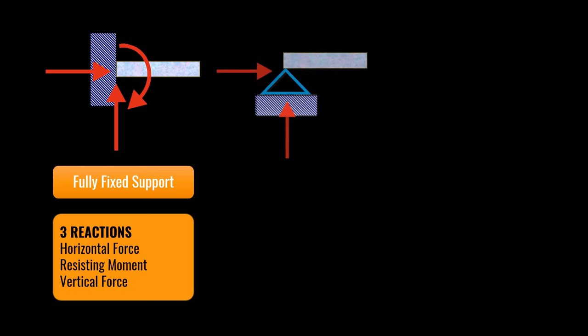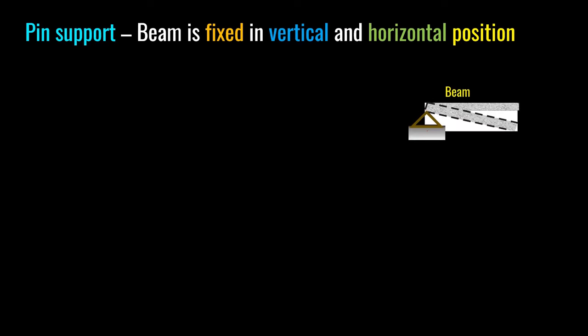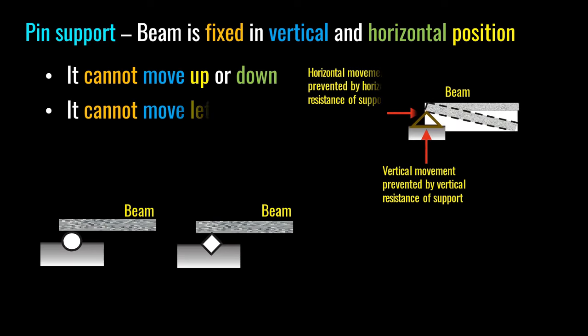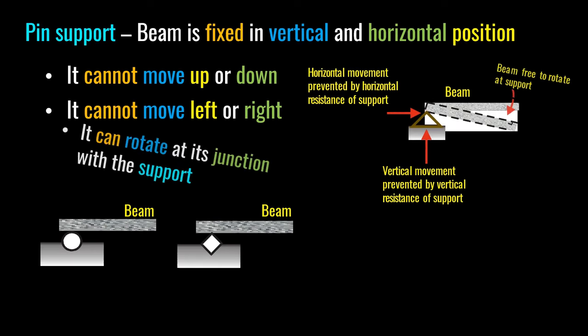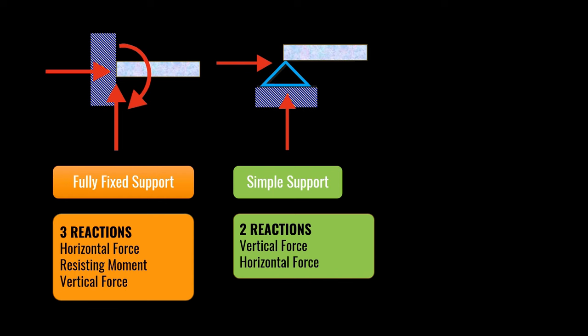A pin support, on the other hand, cannot move in the vertical direction and cannot move in the horizontal direction. But if a load is applied, it can rotate. This means that it has two reactions: horizontal and vertical reaction.